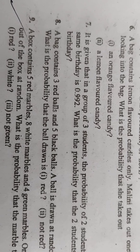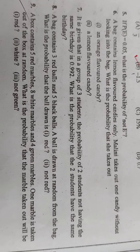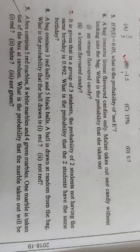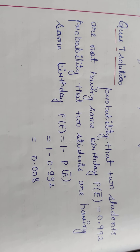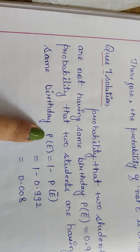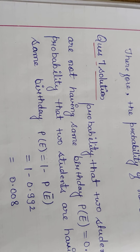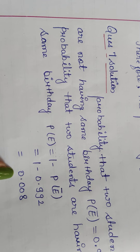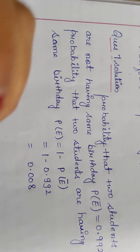Question number 7: It is given that in a group of three students, the probability of two students not having the same birthday is 0.992. What is the probability that two students have the same birthday? P(not-E) is 0.992, so P(E) equals 1 minus P(not-E), which is 1 minus 0.992, giving us 0.008. So the probability that two students have the same birthday is 0.008.